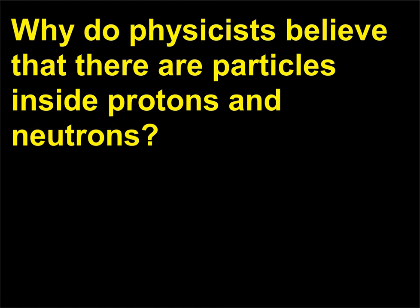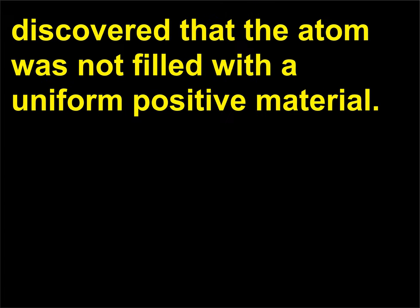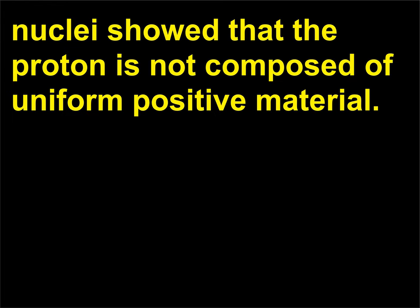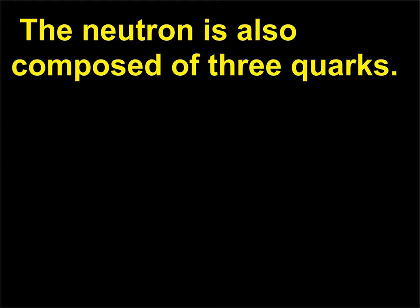Why do physicists believe there are particles inside protons and neutrons? Ernest Rutherford (1871–1937) scattered alpha particles off gold atoms and discovered that the atom was not filled with uniform positive material. In the same way, scattering of protons at high energies off hydrogen nuclei showed that the proton is not composed of uniform positive material; rather, it is composed of three much smaller charged particles called quarks. The neutron is also composed of three quarks.